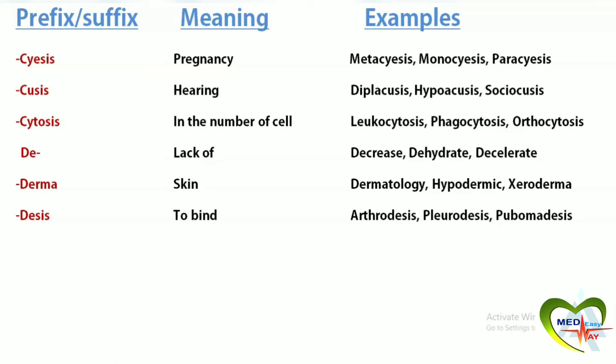Desis means to bind. Orthodesis is the surgical immobilization of a joint by fusion. Pleurodesis is a procedure to adhere a lung to the chest wall. Puboma disease refers to the loss of pubic hair.